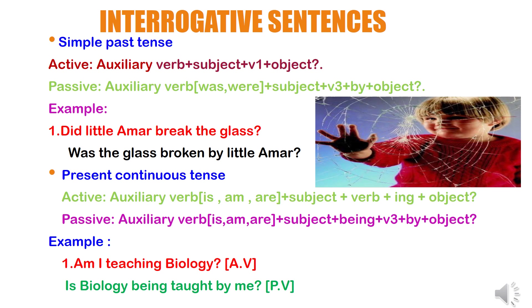Present continuous tense in interrogative sentence. Always start with auxiliary verb. In active voice: auxiliary verb (is/am/are) plus subject plus verb plus ing plus object. In passive voice: auxiliary verb (is/am/are) plus subject plus being plus V3 plus by plus object — it should be in question form. Example — in active voice: 'Am I teaching biology?' In passive voice: 'Is biology being taught by me?' — biology is singular so use 'is'. 'Being' stays as it is. 'Teaching' changes to 'taught' (V3). 'I' changes to 'me' as a pronoun.